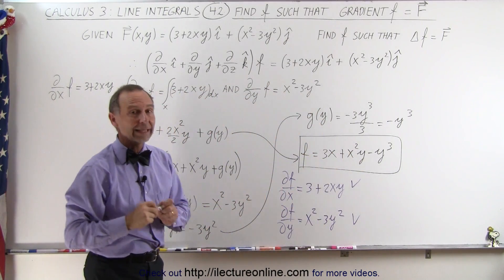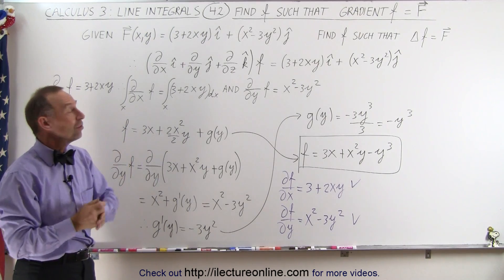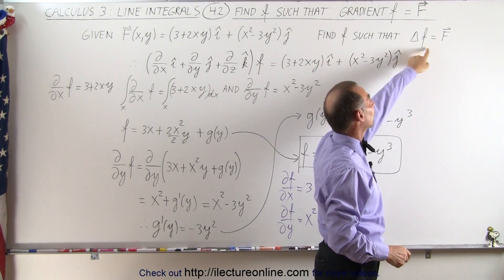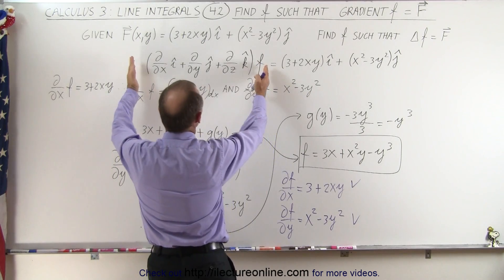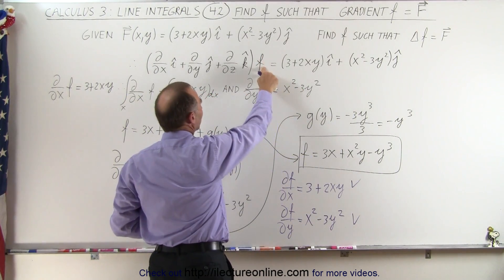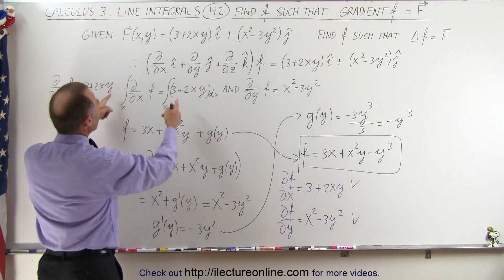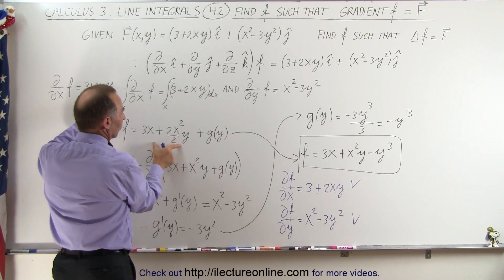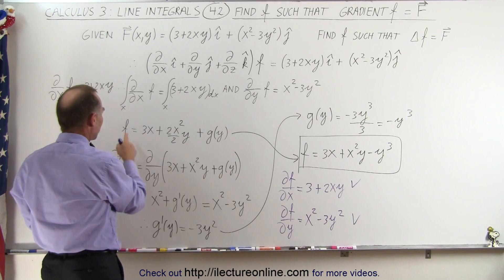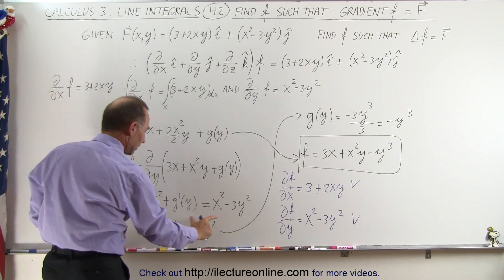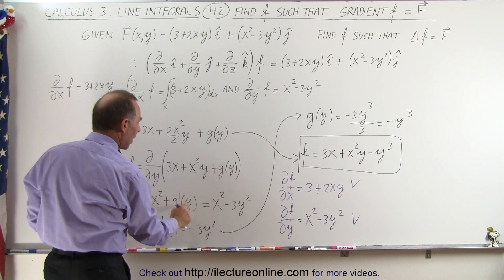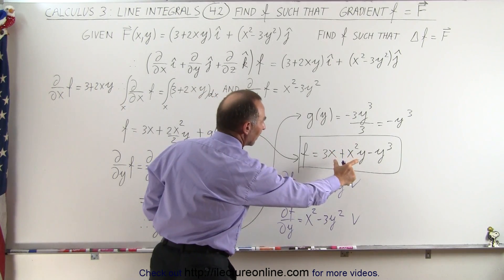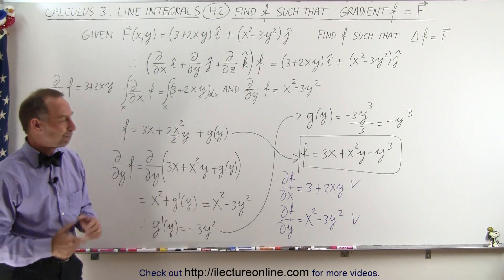So the answer is: if this is a conservative vector field, there must be some function of x and y such that the gradient of that function equals the vector field. We find f by taking the integral with respect to x, which gives the function plus some unknown function g of y. Then we take the partial of that with respect to y, solve for g prime of y, integrate to find g of y, plug it in, and do a quick check to verify we got the right value. That's how it's done.